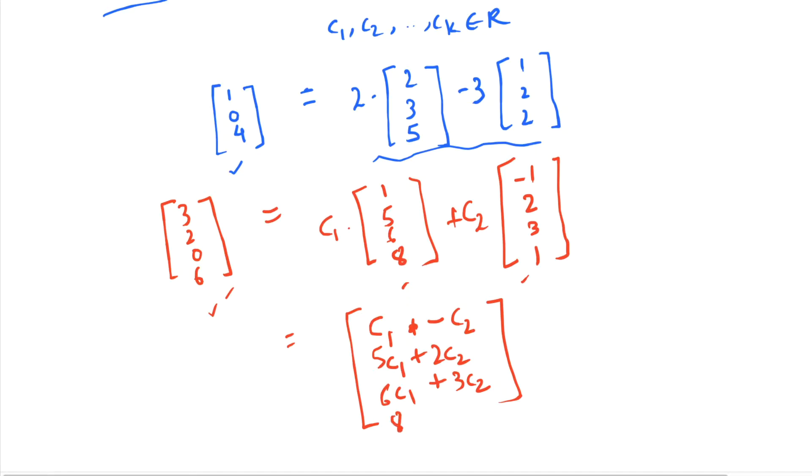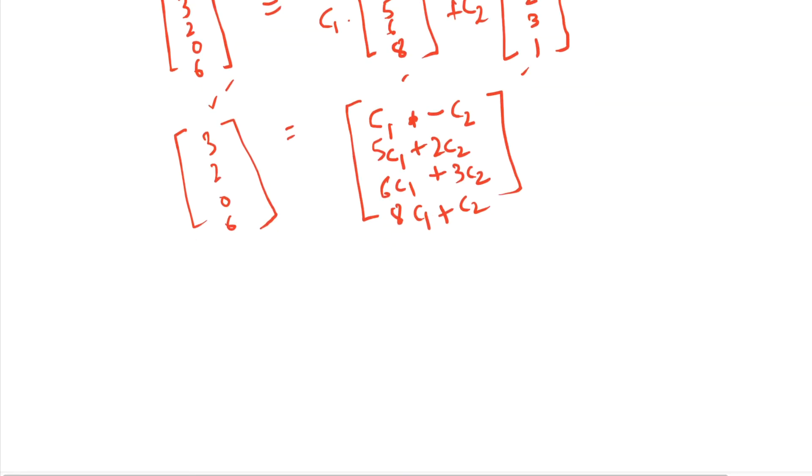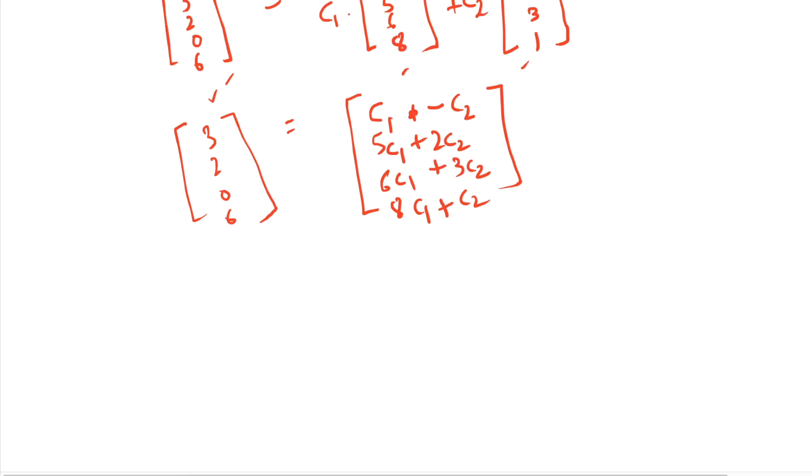and the last element here would be 8c1 plus c2, and this should be equal to [3, 2, 0, 6]. Now we already know that if two vectors are equal, they need to have the same number of components and their respective elements have to be equal.